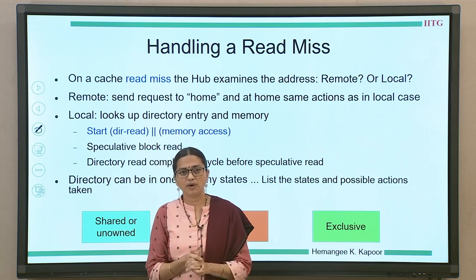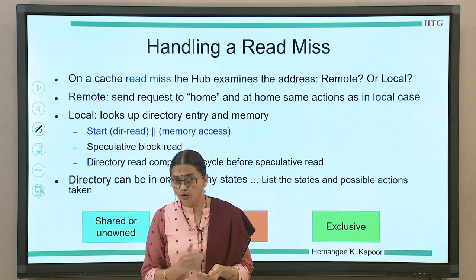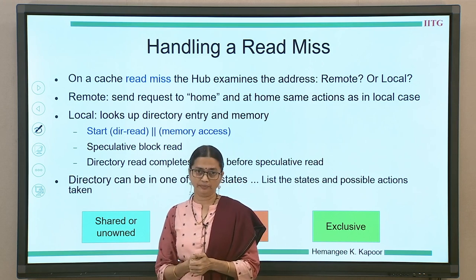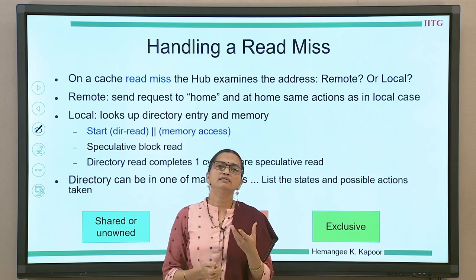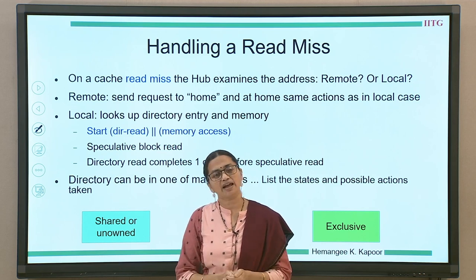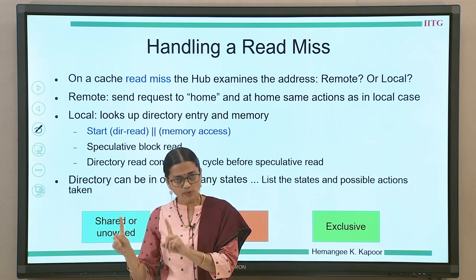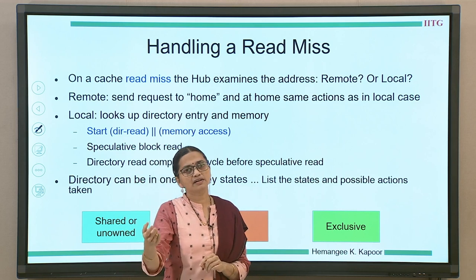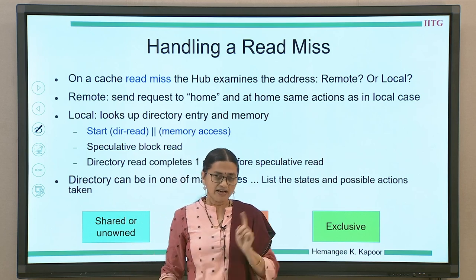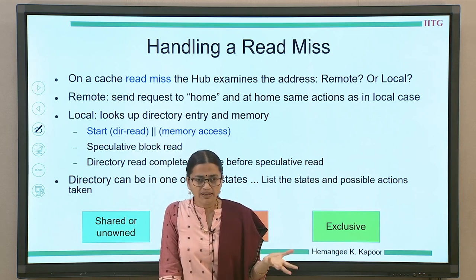What happens at the home node when we get the read miss? We need to read the data from the memory and also see if there are any other sharers, because we need to update information in the bit vector. We are going to do a parallel memory access as well as take actions related to the directory to save on time — start the directory search in parallel to the memory read. We had a 16-bit vector and extended 48-bit directory bit vector as well as the data storage. The directory is going to finish quickly because it is a smaller memory compared to the big main memory.